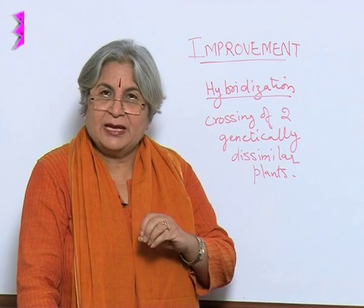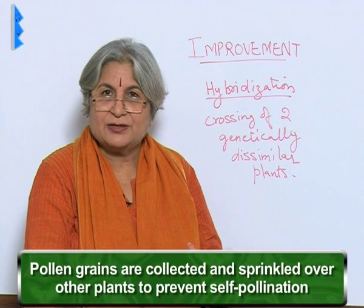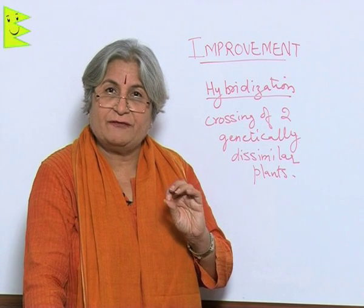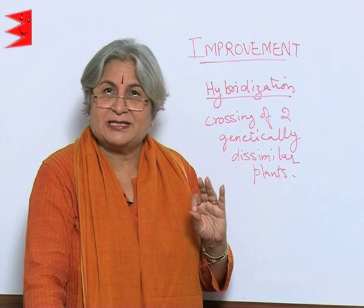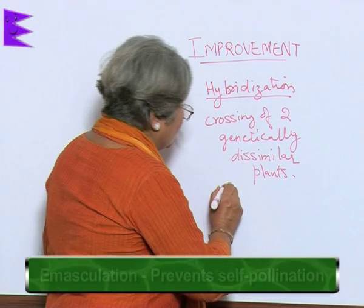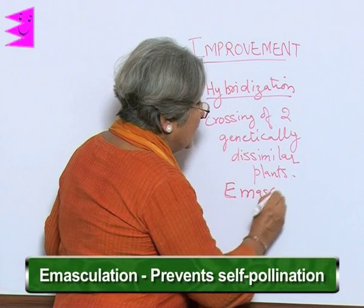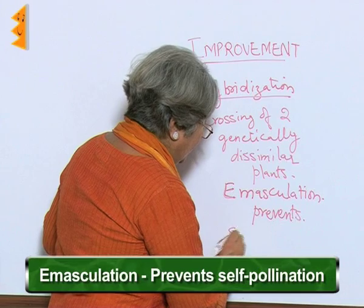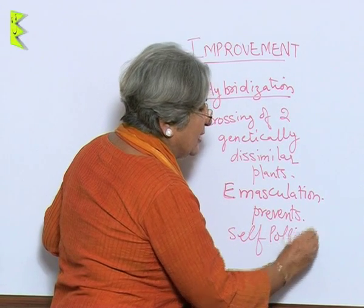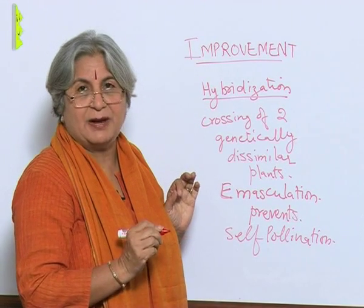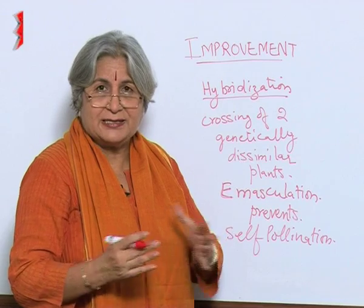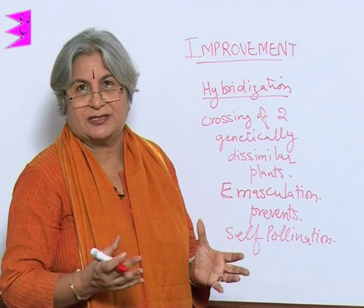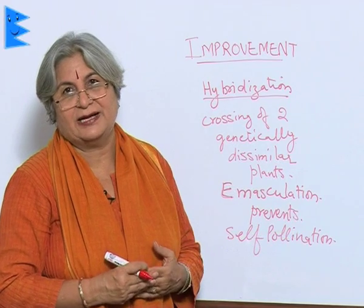For example, if the indigenous variety is disease resistant and the exotic variety is a dwarf variety, if we cross them, there is a possibility we may be able to combine them and get a disease resistant variety which gives more yield. For this, the pollen grains are collected and sprinkled over the other plants to prevent self-pollination. The plant in which we are using only the female reproductive organ — the male organ, that is the stamens, are removed — and that is called emasculation. This is only to prevent self-pollination. We ensure cross-pollination between the two dissimilar plants.